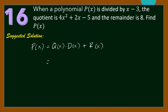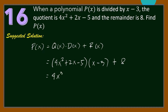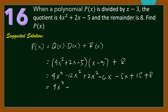Substituting the values to get the polynomial P(x): since the quotient is 4x² + 2x − 5, this is Q(x); the divisor is x − 3, this is D(x); and the remainder is 8, so R(x) = 8. Multiplying (4x² + 2x − 5) by (x − 3), we get 4x³ − 12x² + 2x² − 6x − 5x + 15 + 8. Combining similar terms gives P(x) = 4x³ − 10x² − 11x + 23.